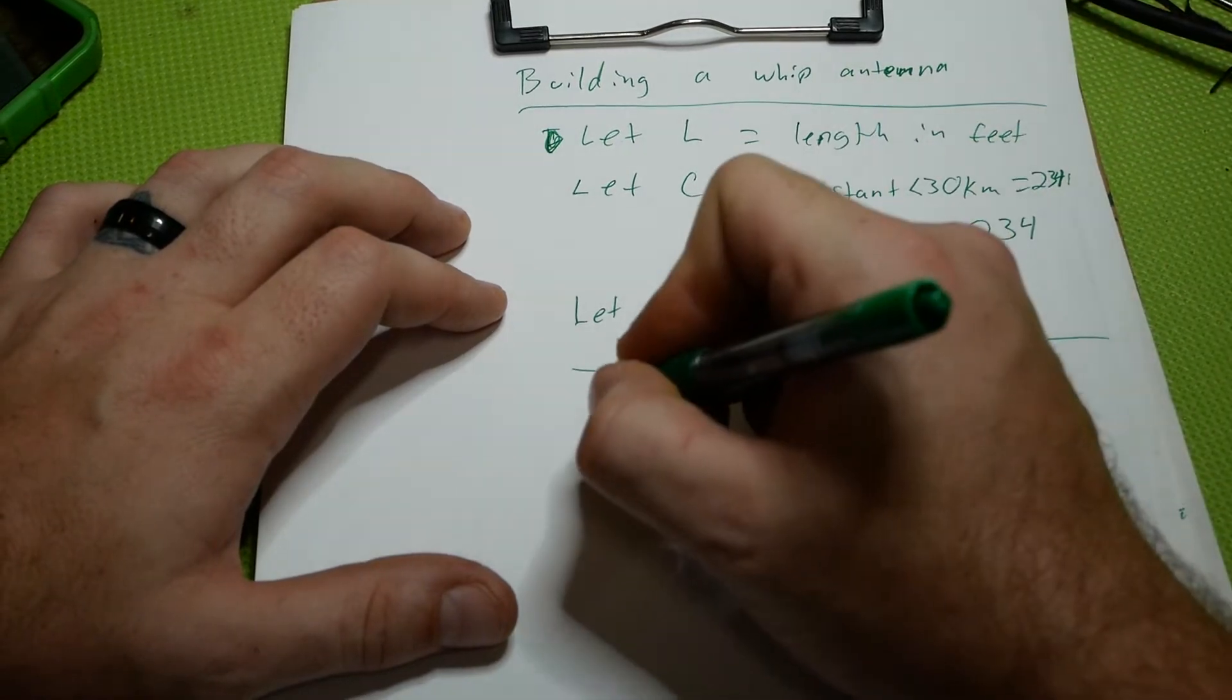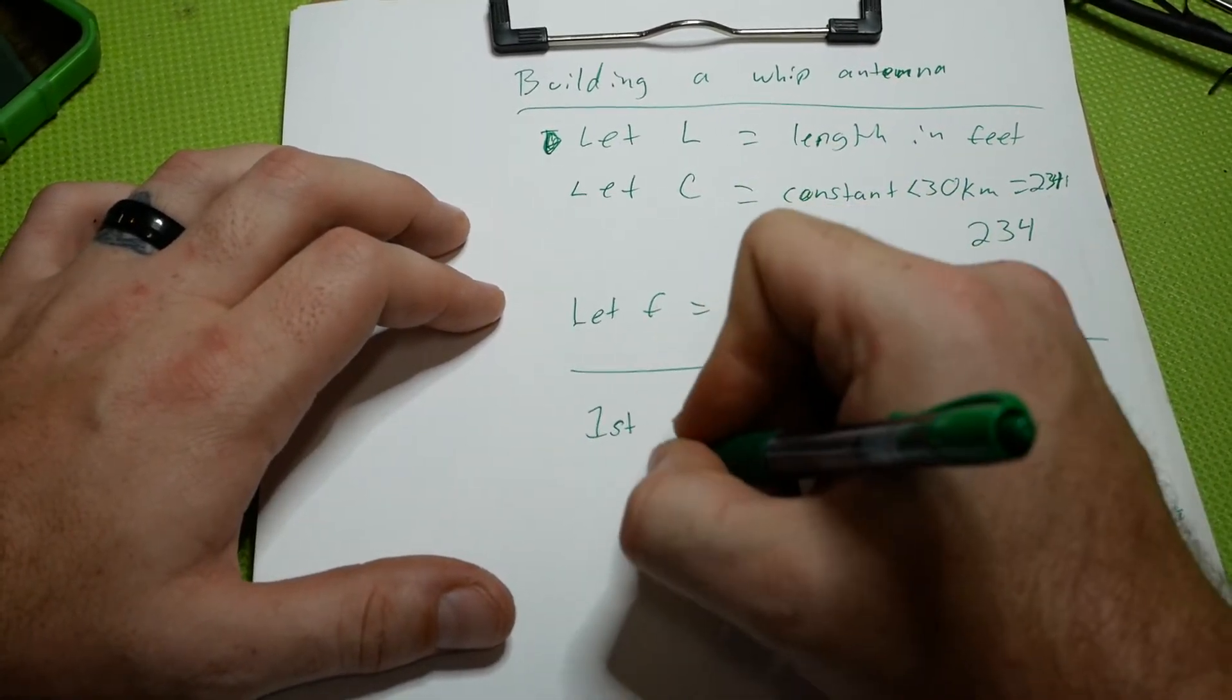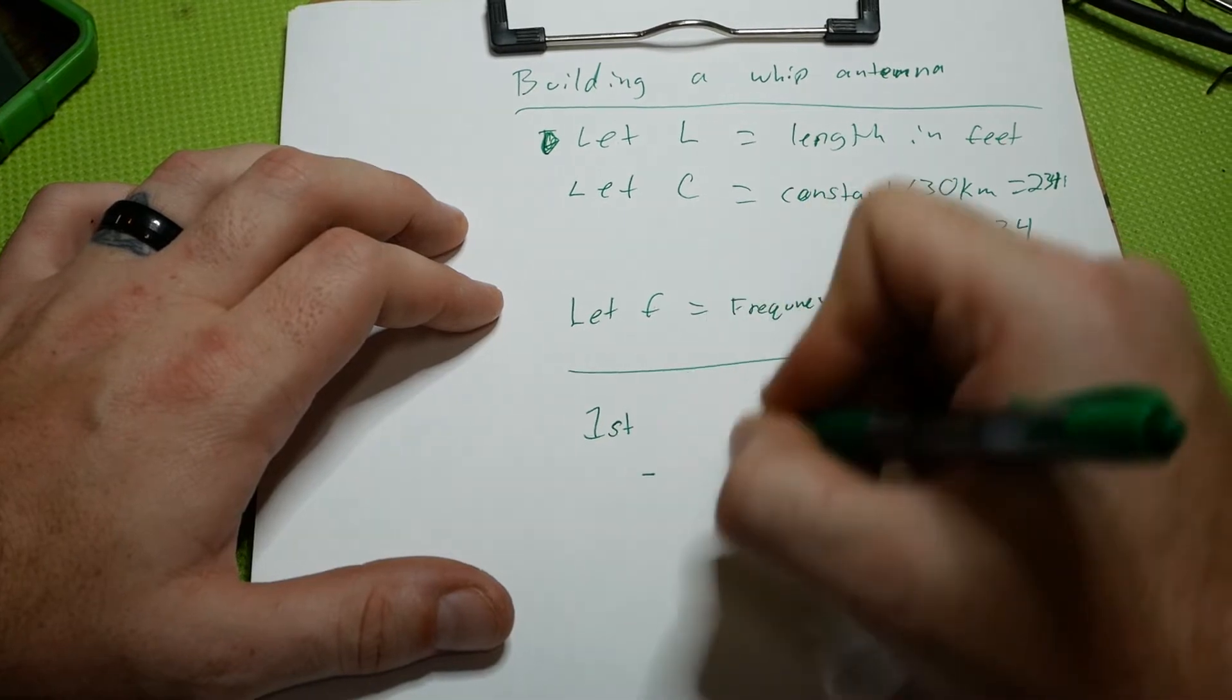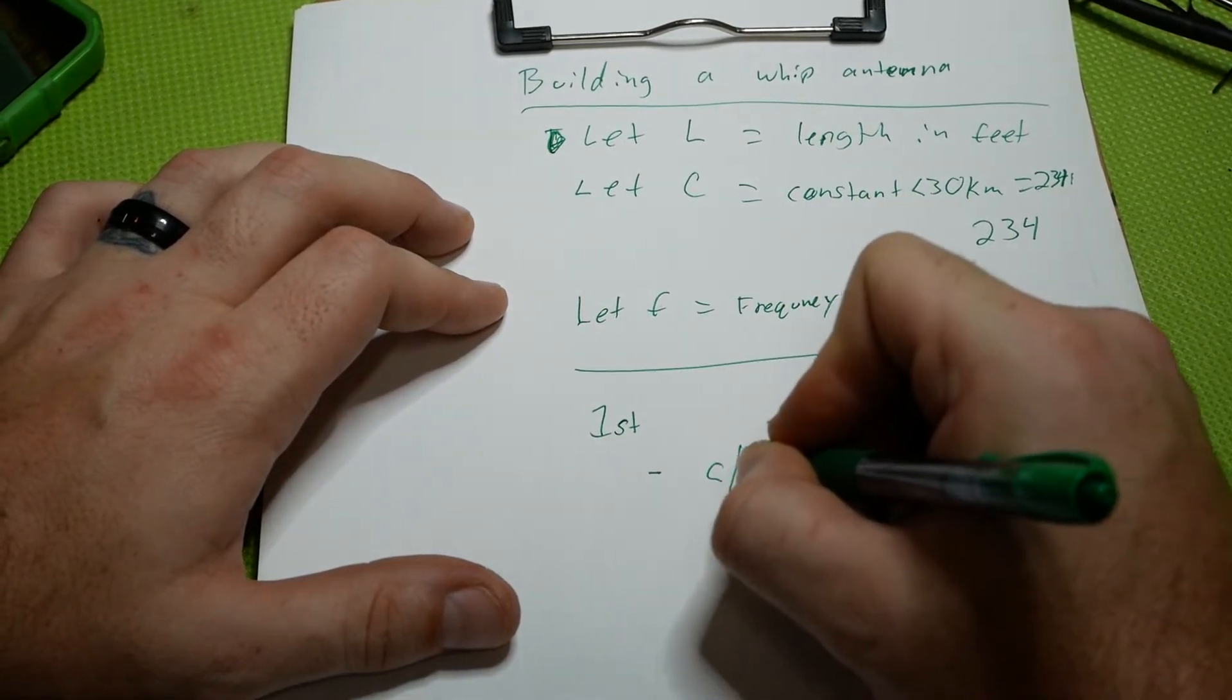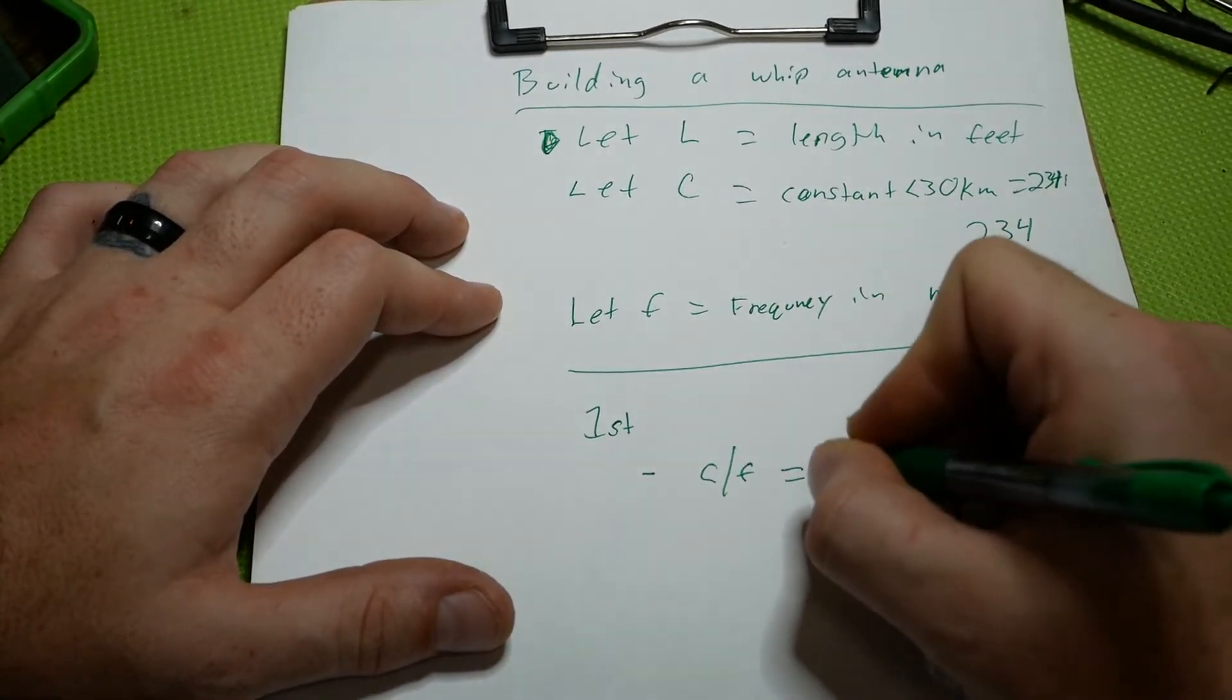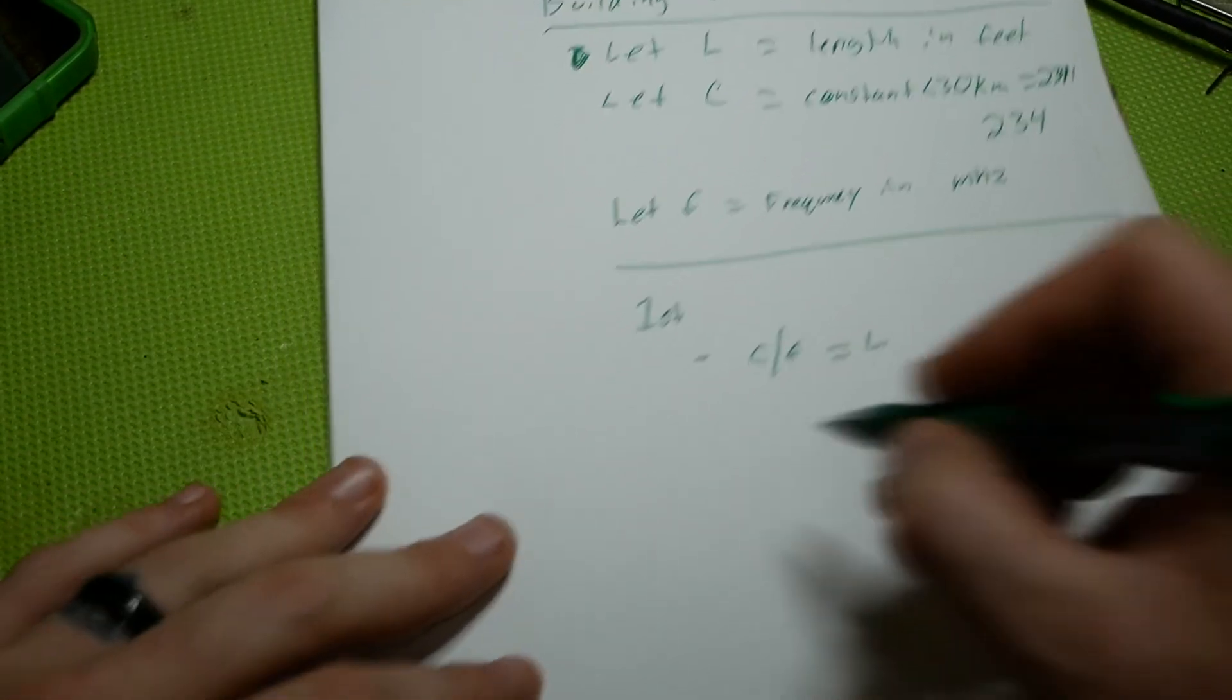But the first formula, and this will be the first of two. The first is C divided by F equals L. It's that simple.